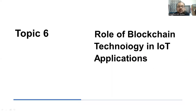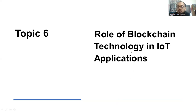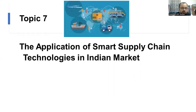Topic number six is the role of blockchain technology in internet of things applications. How does blockchain technology help in IoT? What is the significance of blockchain technology in IoT and how can you apply it in the field of internet of things? That you have to explain with the help of a scientific approach.